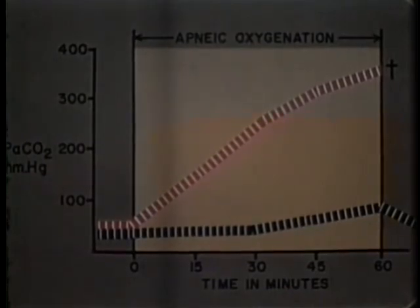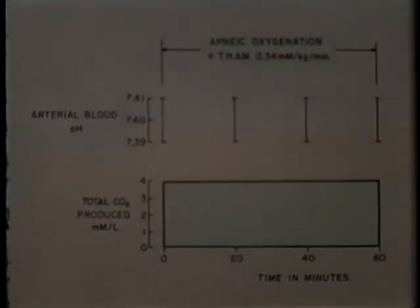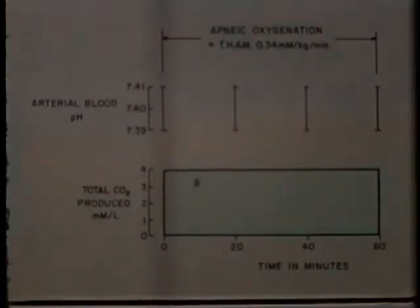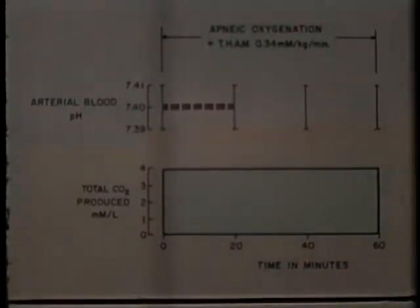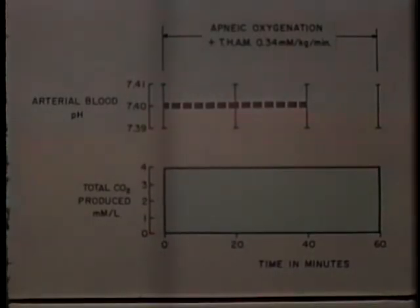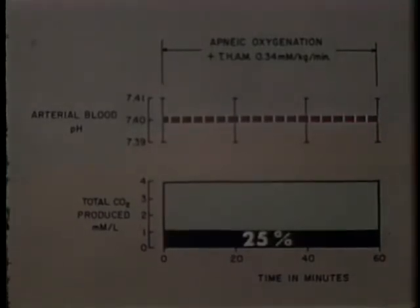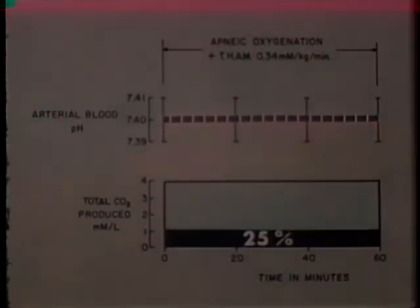The results indicate that THAM will neutralize the untoward effects of carbon dioxide retention in two ways. One, the compound's buffering capacity maintains pH within the normal range. Two, 25% of the total amount of carbon dioxide produced during apnea will be excreted in the urine.